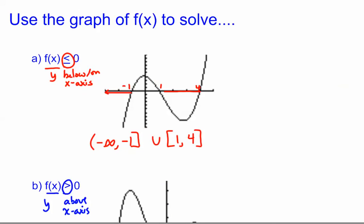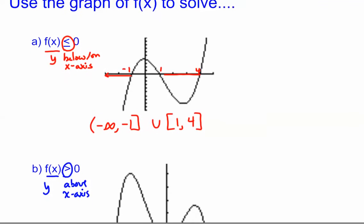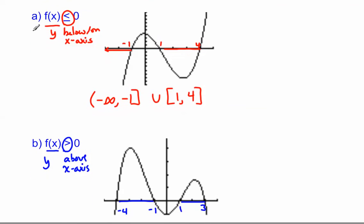All right, let's take a look at another example. This time we're not actually even given the function. We're just given a picture, but that's okay. We can work with that. If they have this graph here, and I've labeled my zeros accordingly, negative 1, 1, and 4,